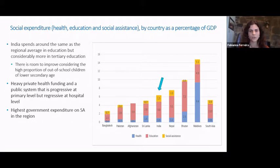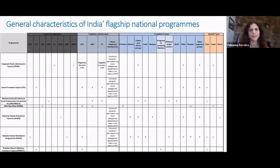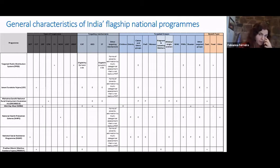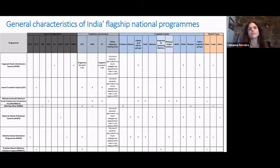The next slide shows the general characteristics of programs included in the sample. The E letter on the table refers to eligibility criteria while P shows priority — meaning people don't need to have these characteristics to be included in the eligible population for the benefit. Overall the national flagship programs are quite varied — different types of programs, different target groups, and different benefit types.